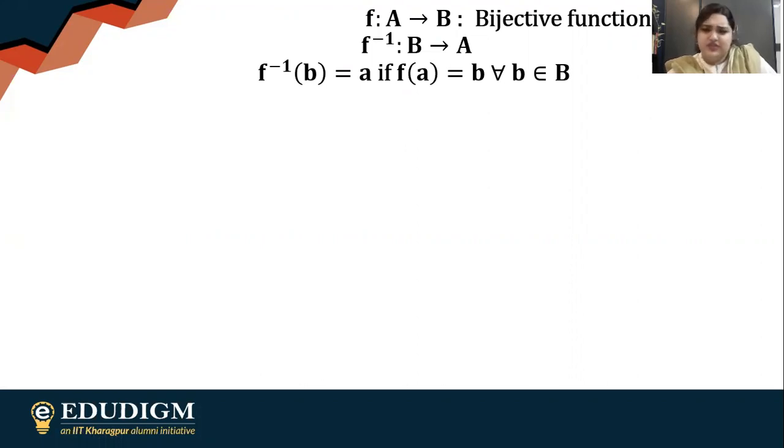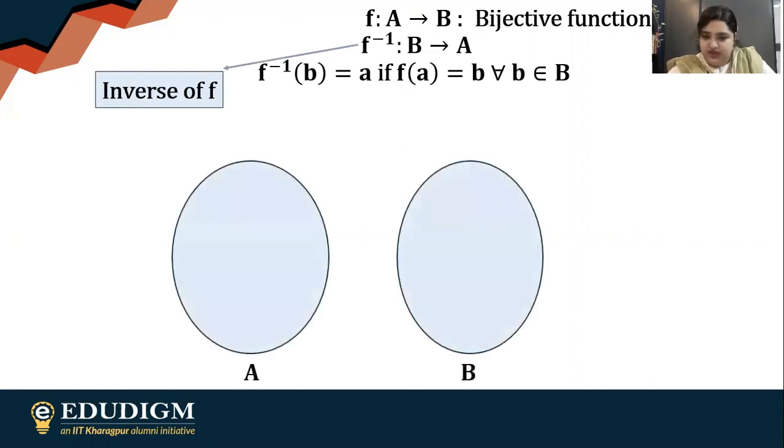Just think about the word inverse and what it means. Now f inverse of b will be a, provided f of a equals b. How do we define this f inverse? We have f from A to B. So a is getting mapped to b under f, so we write b equals f(a). Under f inverse, b will get mapped to a and we write a as f inverse of b.